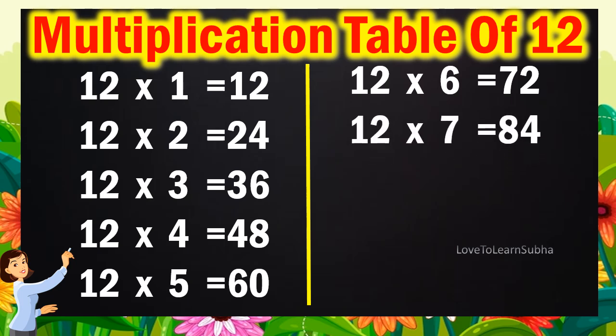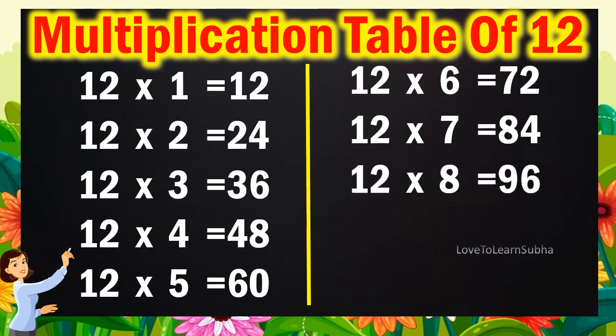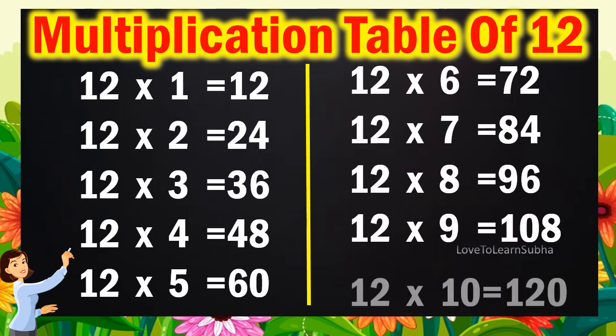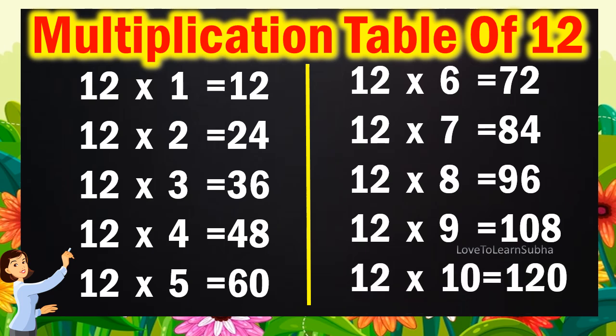12 7s are 84. 12 8s are 96. 12 9s are 108. 12 10s are 120.